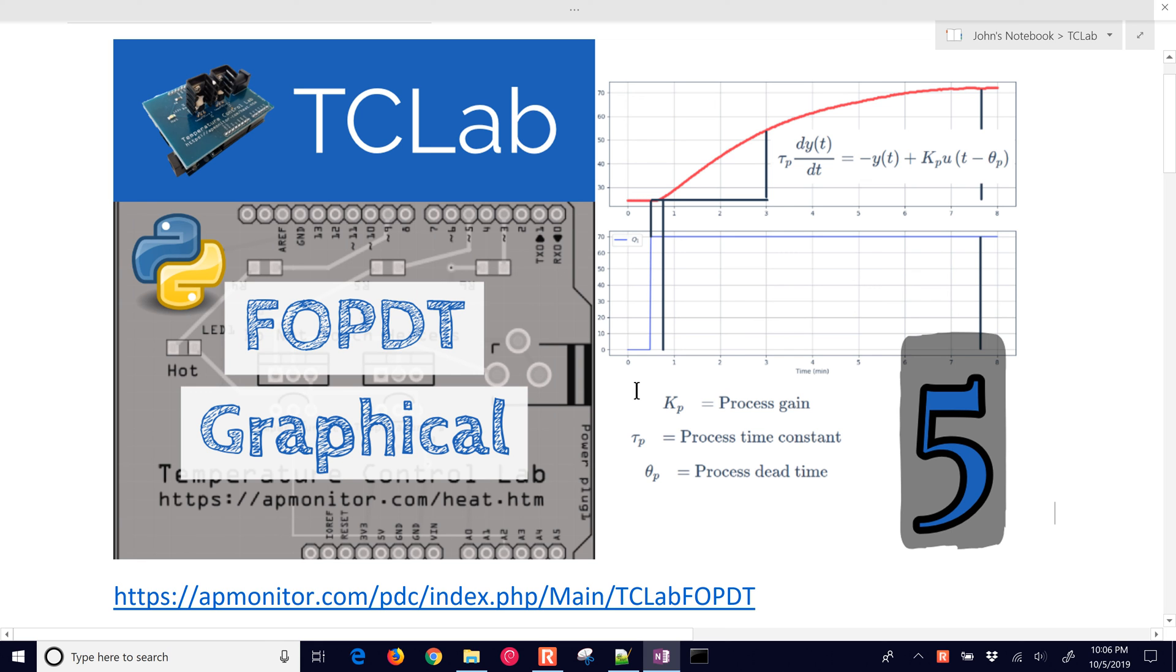The first-order plus dead time model is a standard model that approximates many dynamic systems and includes three parameters. One is a time constant, the other is a gain, and the other one is a dead time, or these three that are listed here.